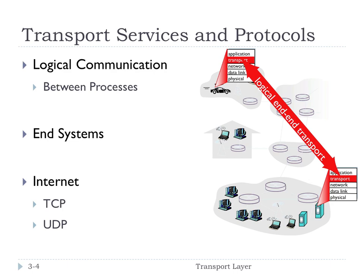Logical meaning that it will appear as if host A is talking to host B, even though in actuality they're going over lots of other intermediate links, routers and stuff in between. The transport layer is about end systems communicating with each other — that's another way of saying it's an end-to-end protocol, not point-to-point.